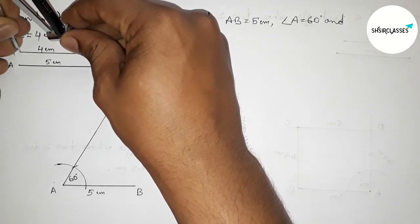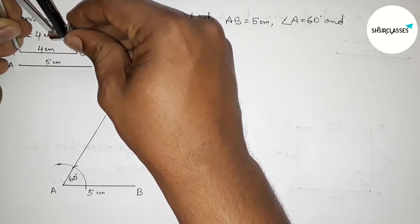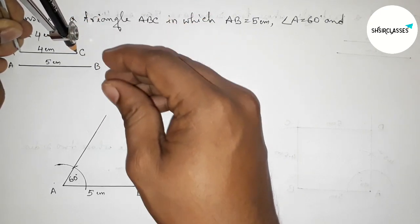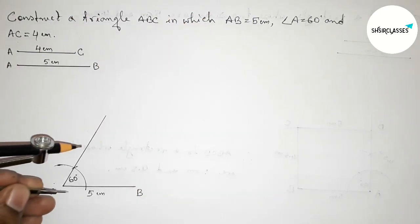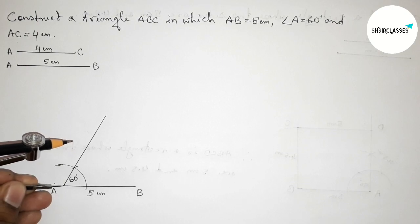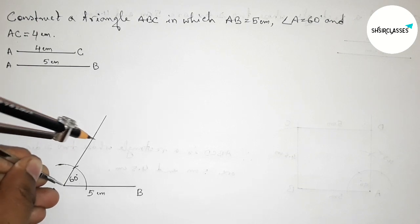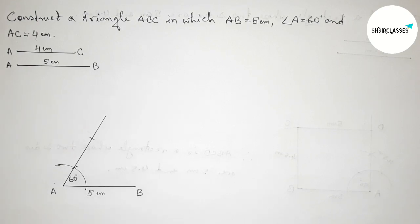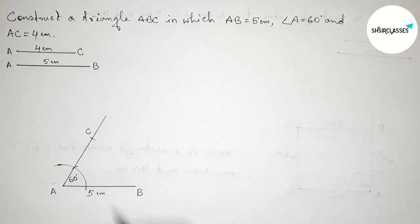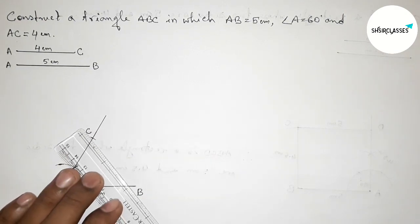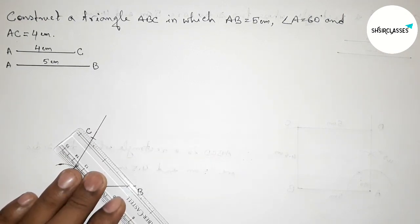Next, taking the length AC equals to 4 centimeter with the help of compass. Putting the compass on point A and cutting here to mark point C.